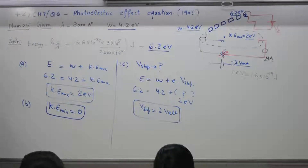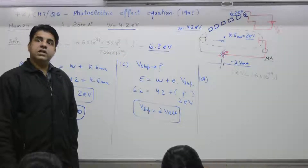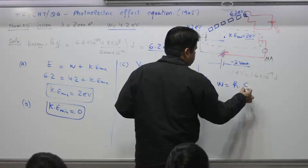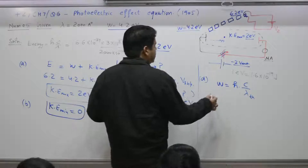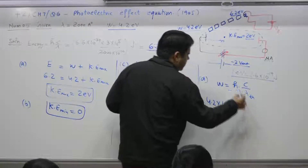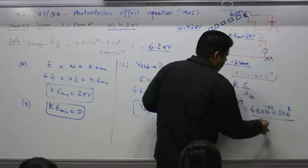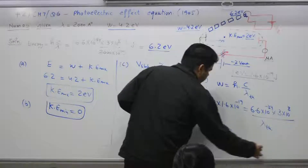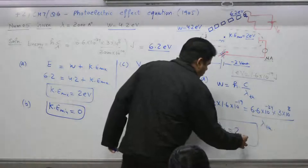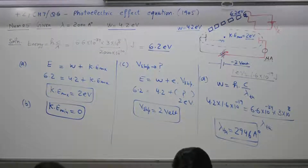Part D: cutoff wavelength. Cutoff (threshold) wavelength is the value at threshold frequency. Work function = h·c/λ_threshold. Work function is 4.2 eV = 4.2×1.6×10⁻¹⁹ J. With h = 6.6×10⁻³⁴ and c = 3×10⁸, solve for λ_threshold. Confirm that you get approximately 2946 angstroms. Solve and confirm — 2 minutes with you.